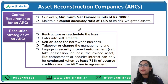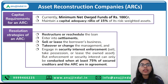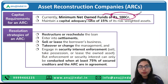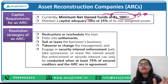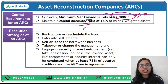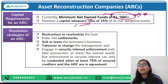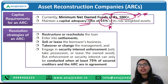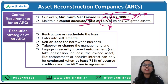Talking about capital requirements for an ARC — their minimum net owned fund should be a minimum of rupees 100 crores. As per the recent amendment and the committee's recommendation, this has been changed — you need to update yourself here. Talking about the capital adequacy ratio, the CRAR — capital to risk weighted assets ratio for an ARC is 15%, which is very high. They should have at least 15% of their assets as buffers so that they can support themselves in times of any external shocks.